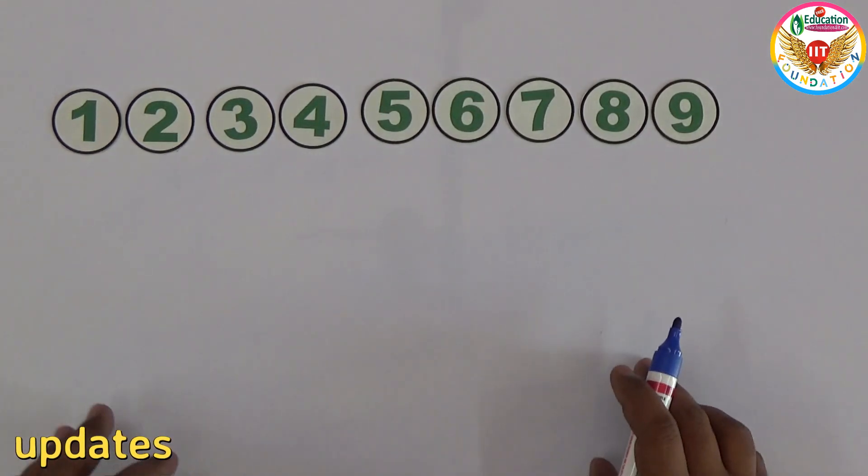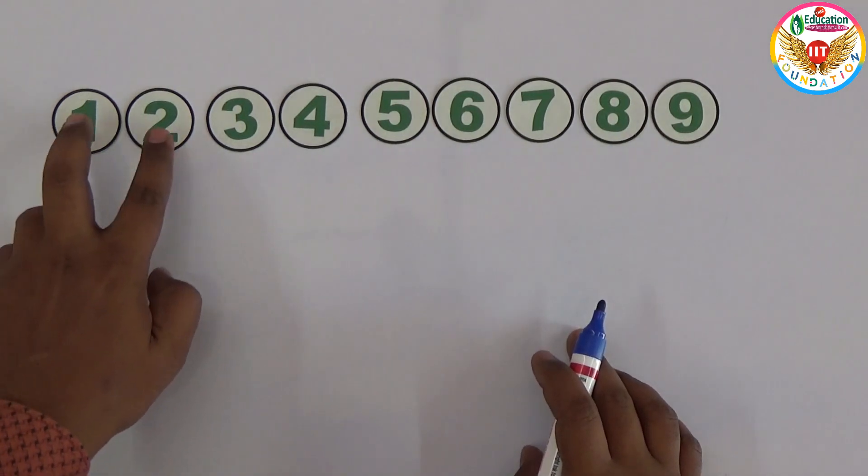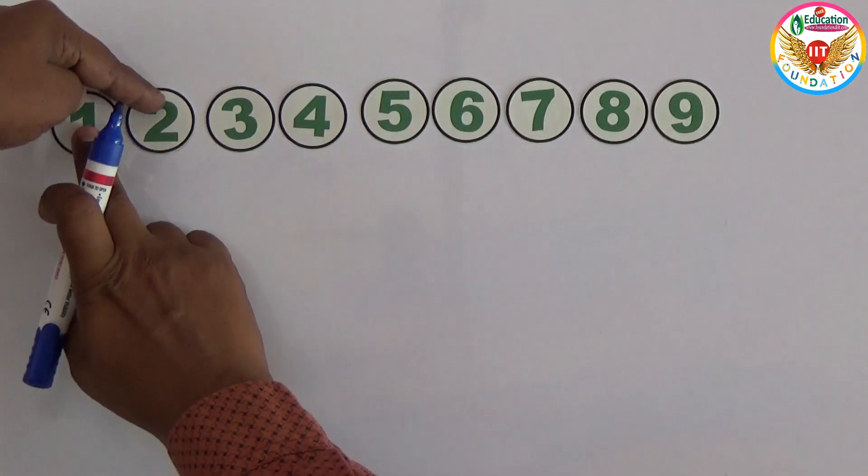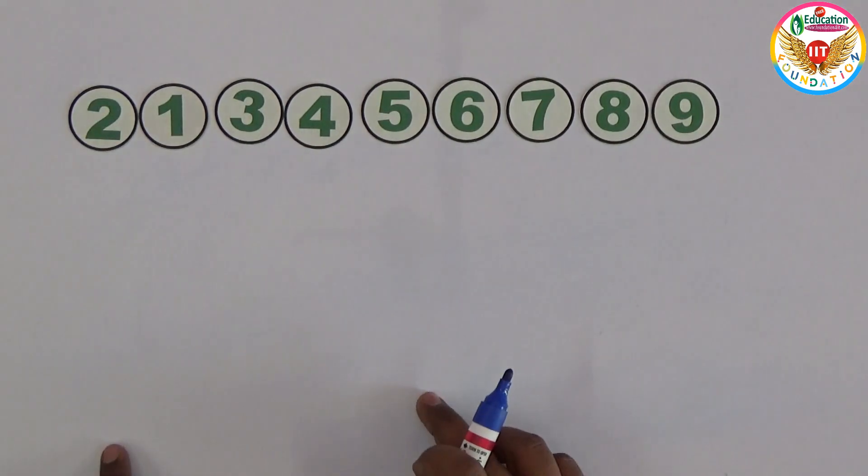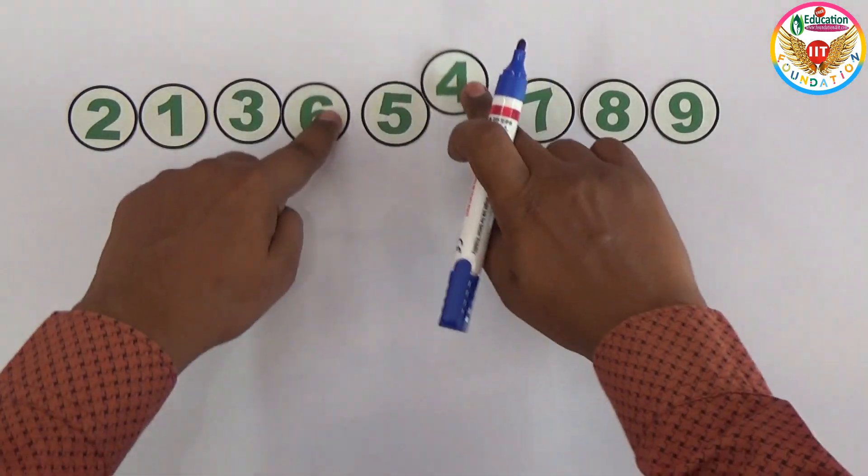We can interchange digits. For example, if I interchange these two, that is one counter. Any two digits, if you interchange the positions, that is one counter.